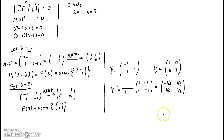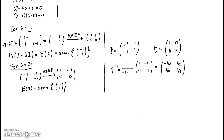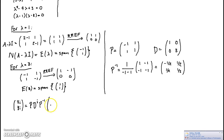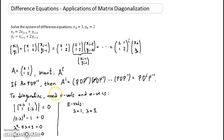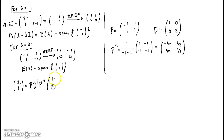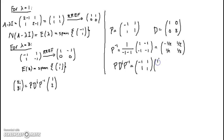So let's write what we have. We have xᵢ, yᵢ written as PD^i P⁻¹ times x₀, y₀ — where x₀ = 1, y₀ = 2. We can calculate PD^i P⁻¹ on the side. P = [−1,1;1,1], D^i = diag(1^i, 3^i) = diag(1, 3^i), and then times P⁻¹.